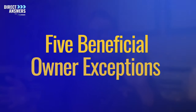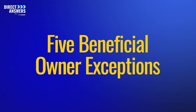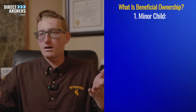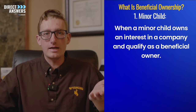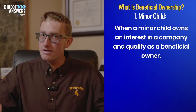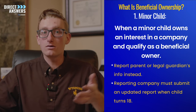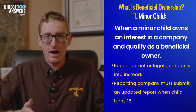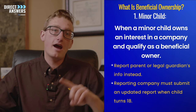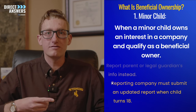There are five exceptions to the beneficial ownership requirement. If you meet one of these five exceptions, you don't need to report your beneficial ownership information to FinCEN. The first exception is for a minor child. If a minor child owns an interest in a company and they qualify as a beneficial owner, instead of reporting their information, a parent or legal guardian would report on their behalf. But when that child turns 18, they're going to have to report their beneficial ownership information to FinCEN.